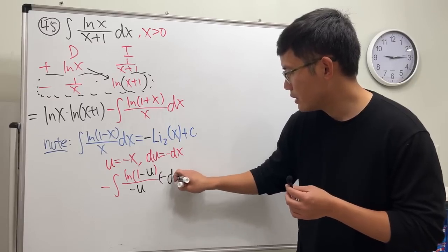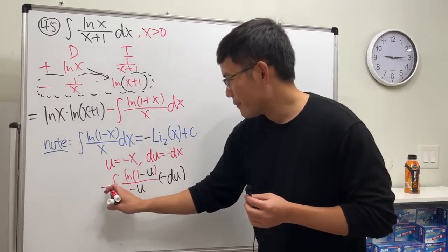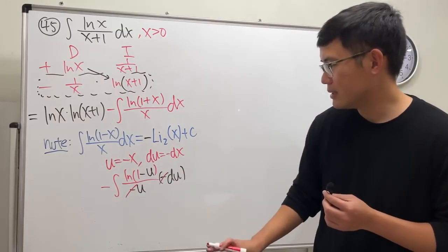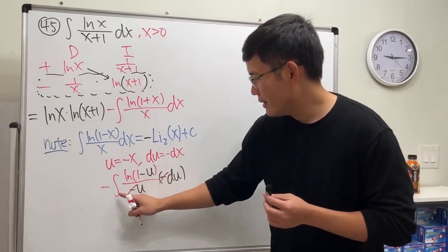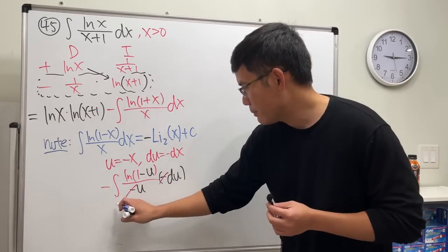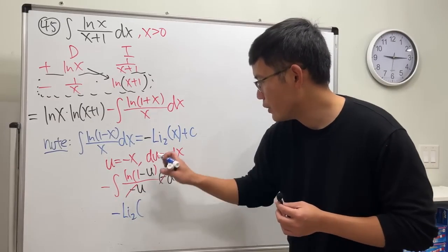negative du. Look at that. Now let's cancel this one out. Yes, no problem. And if you look at this part, that's this part—this part is negative li₂(u).